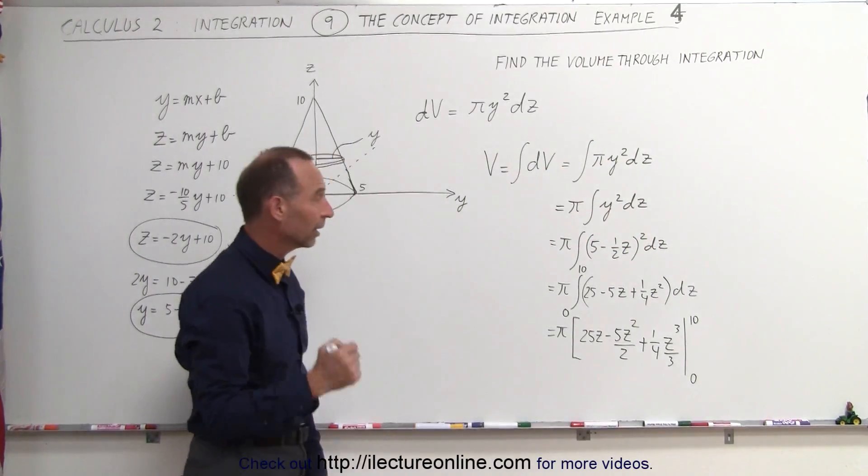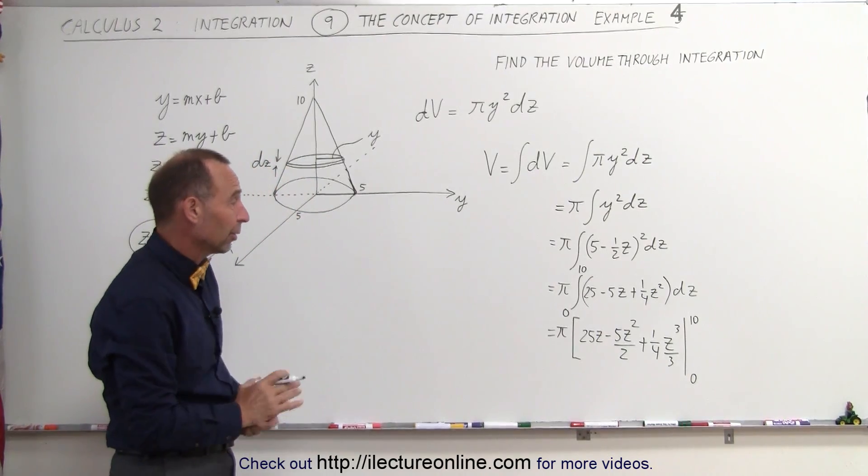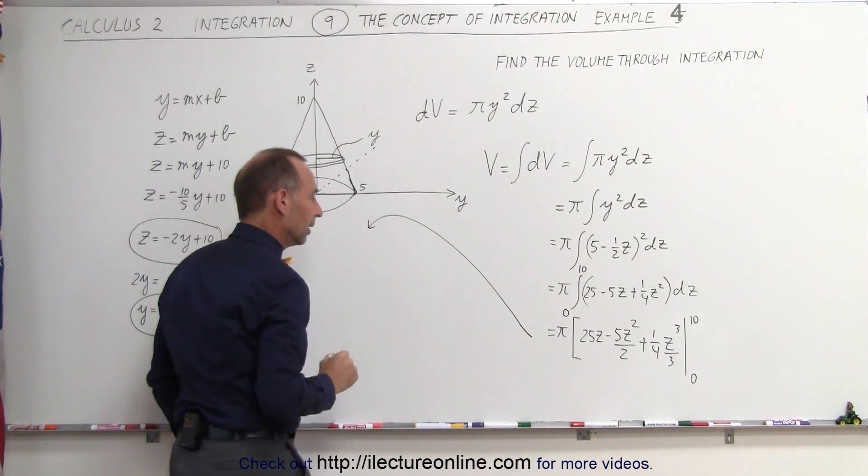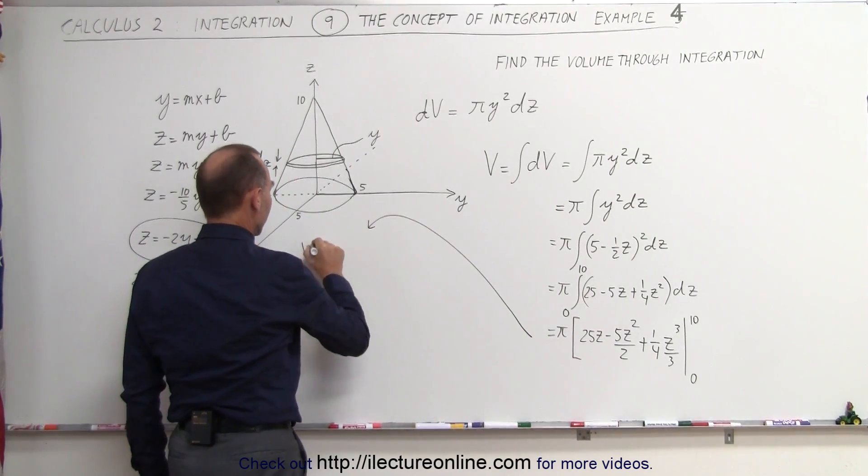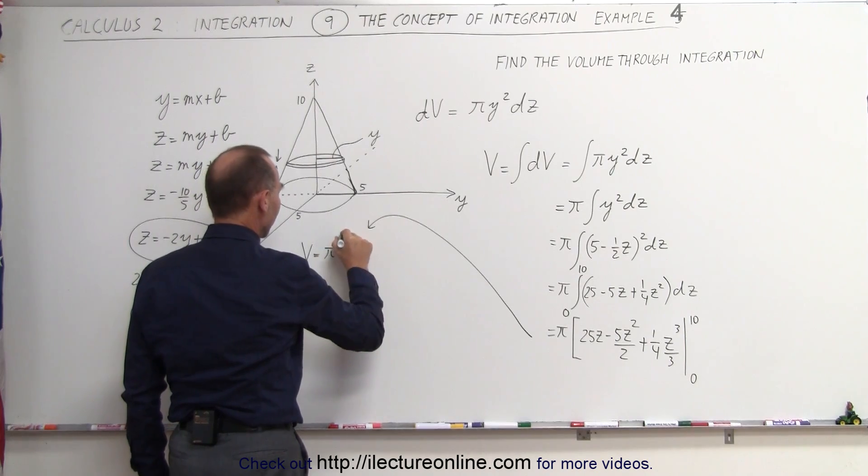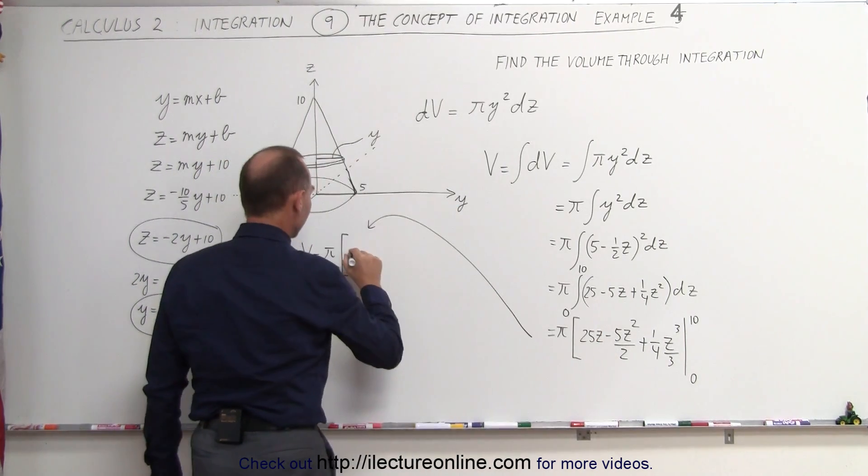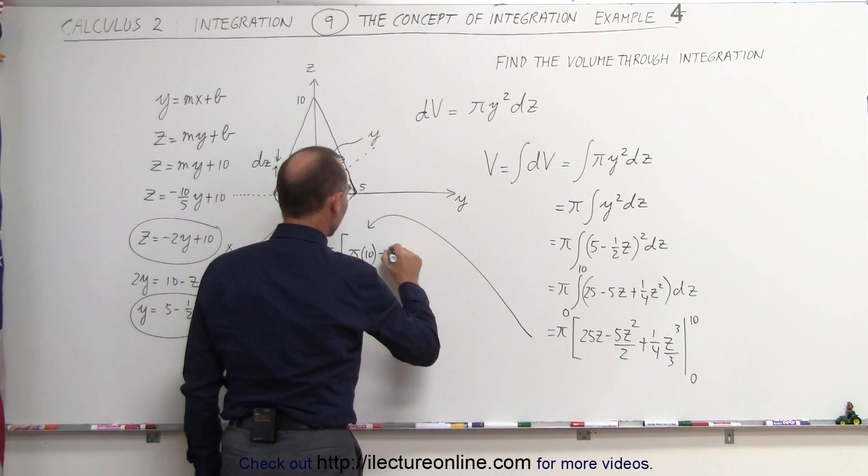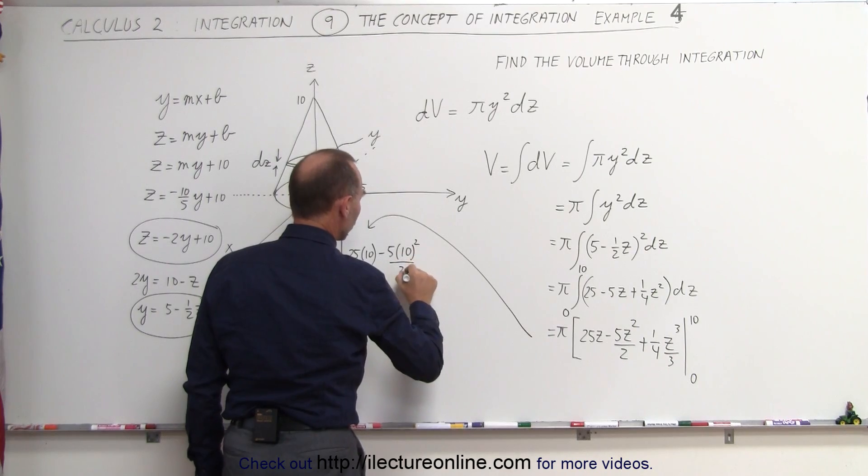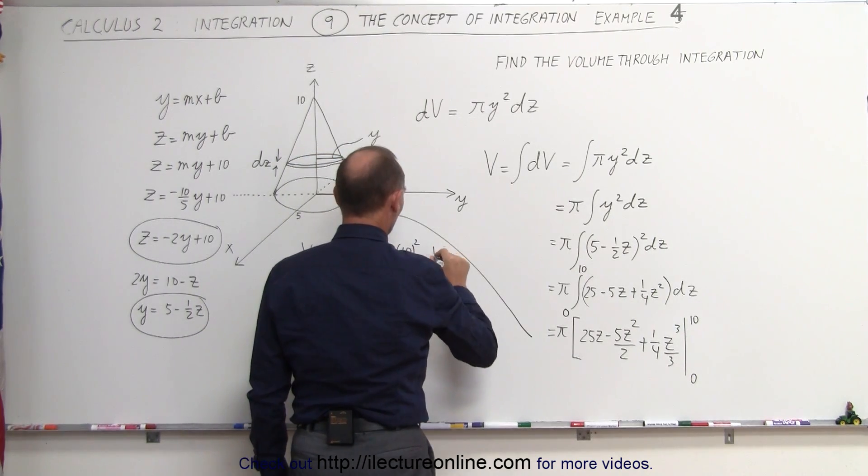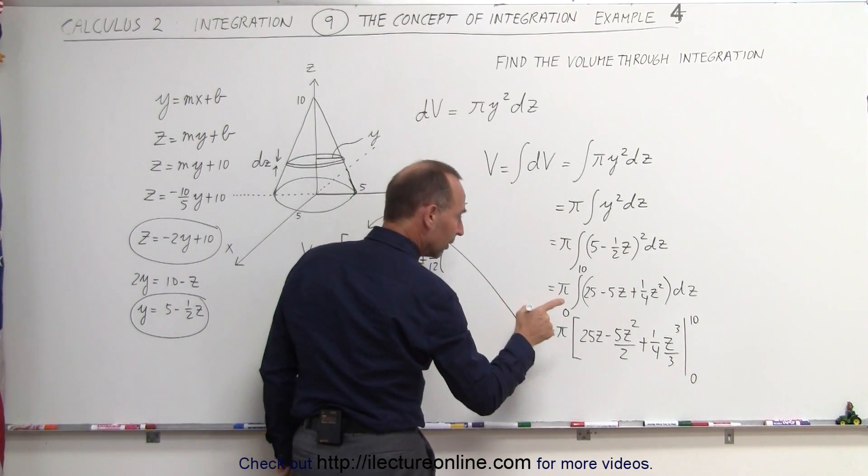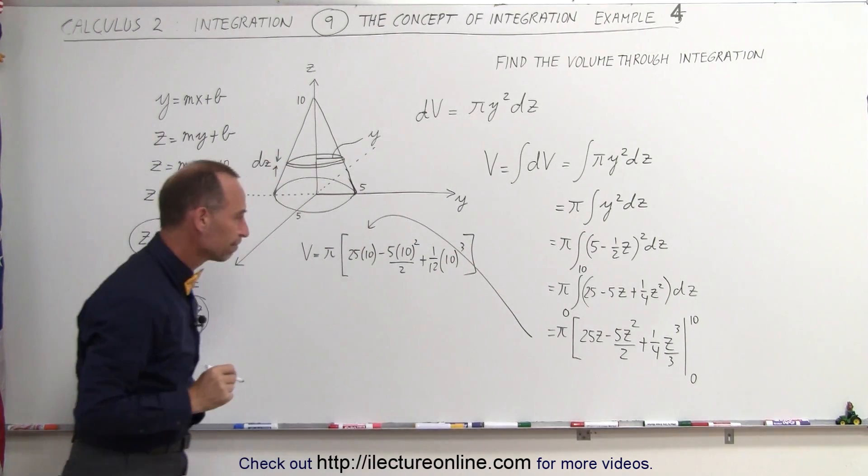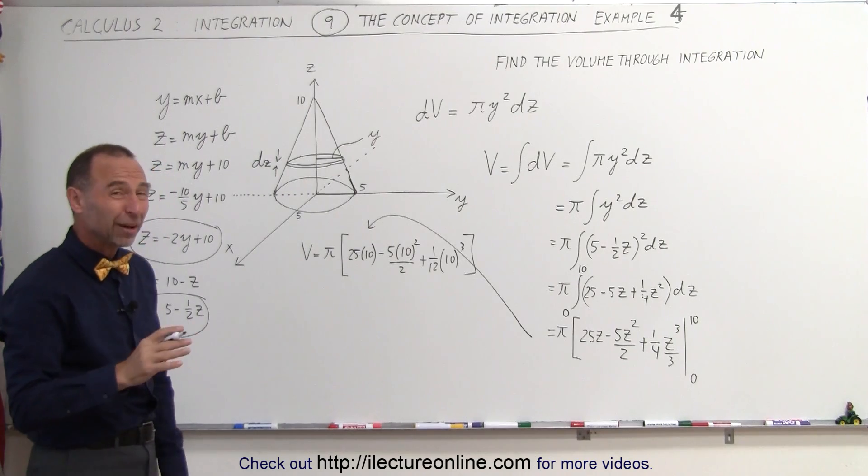Now all we have to do is plug in the limits. When we plug in the lower limit, we get 0, so we don't need to bother with the lower limit. We'll plug in the upper limit. Let me come over here, because I'm out of room. So we can say that the volume is equal to π times 25 times 10, minus 5 times 10 squared over 2, and plus 1 over 12. That would be 10 cubed, like this.